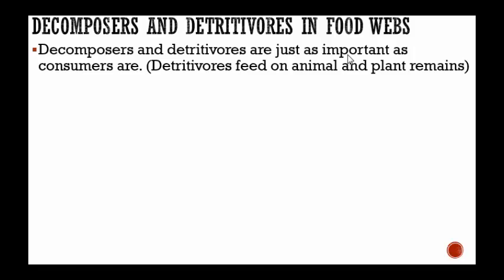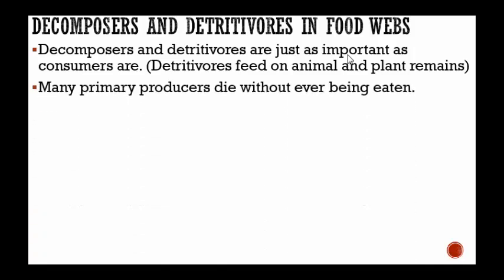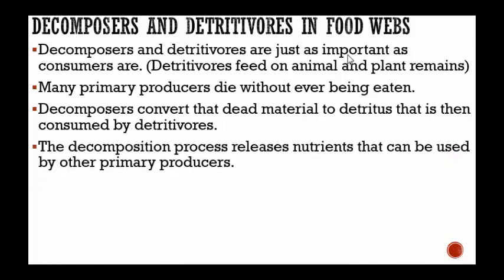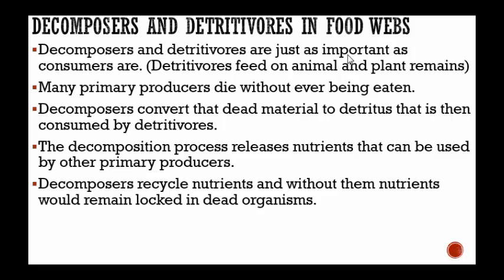Let's talk about decomposers and detritivores in food webs. They are just as important as consumers. Decomposers use powerful enzymes to break matter down. Detritivores actually feed on animal and plant remains. Many primary producers die without ever being eaten. Decomposers convert that dead material to detritus that is then consumed by detritivores. The decomposition process releases nutrients that can be used by other primary producers — that energy and matter is not created or destroyed, it's just released back into the ecosystem. Without decomposers, those nutrients would remain locked in dead organisms.